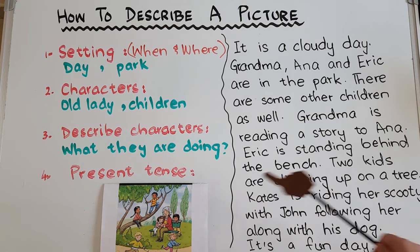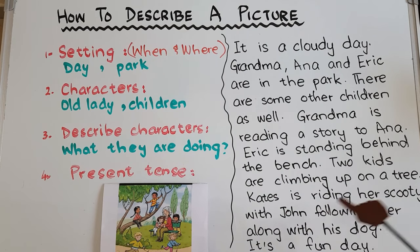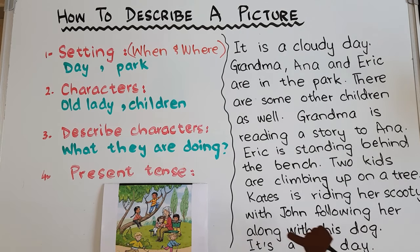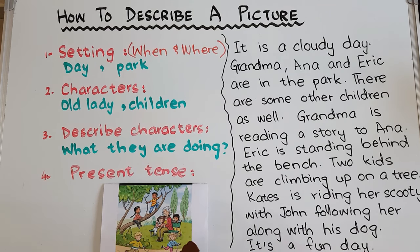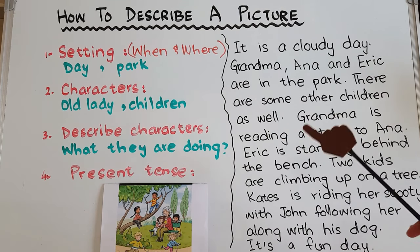'Kate is riding her scooty with John following her along with his dog.' 'It's a fun day.' The final sentence, and the paragraph is done. For a KG2 kid or a kid who is just in Grade 1, this much writing is enough.